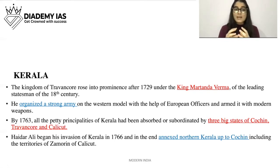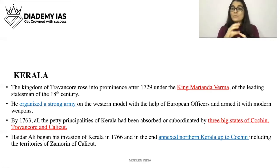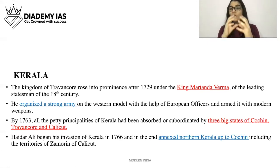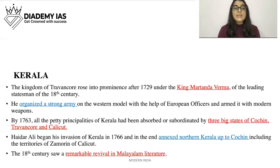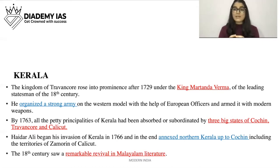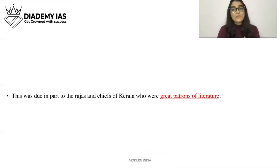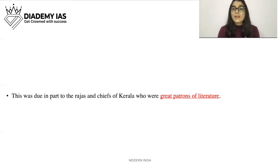Hyder Ali began his invasion of Kerala in 1766 and in the end annexed northern Kerala up to Cochin, including the territories of the Zamorin of Calicut. The 18th century saw a remarkable revival in Malayalam literature. This happened because the rulers and chiefs were great patrons of literature — they supported and were very much interested in it.